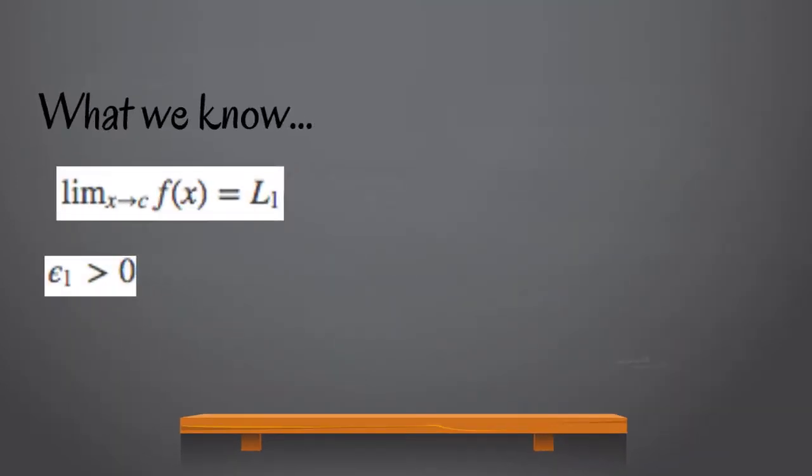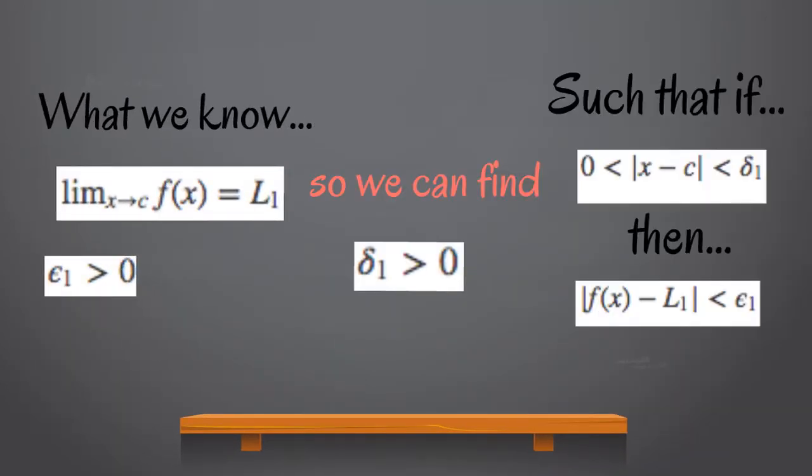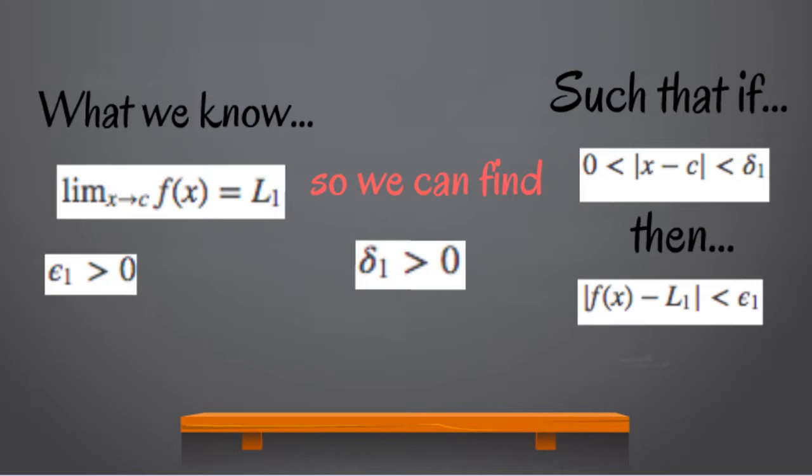Let's look at what we know. We know that limit x approaching c f(x) equals L1. So, again, appealing to the epsilon delta definition, only this time in reverse, we also note that for any epsilon_1 > 0, we can find a delta_1 > 0, such that if 0 < |x - c| < delta_1, then |f(x) - L1| < epsilon_1.